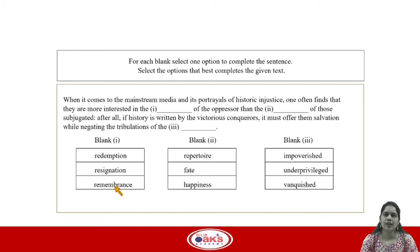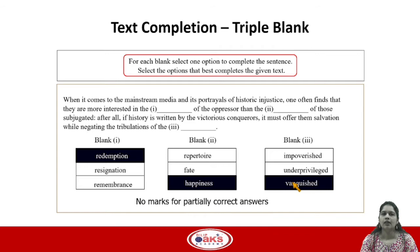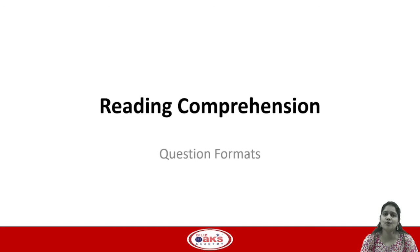The last question type is text completion triple blank, where exactly like a double blank you will see three options per blank. The only difference is you will now see one additional blank and an additional set of options for the third blank, so you are selecting one answer choice per blank. Remember: for any question type where they ask you to select more than one answer — whether sentence equivalence, double blank, or triple blank — there will never be partial markings, so you have to get every single option right to get a point.